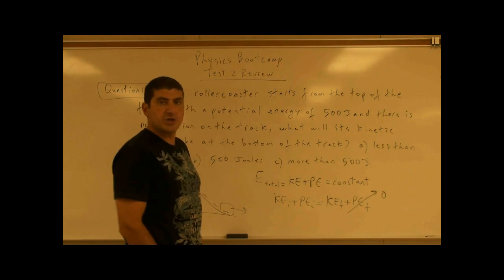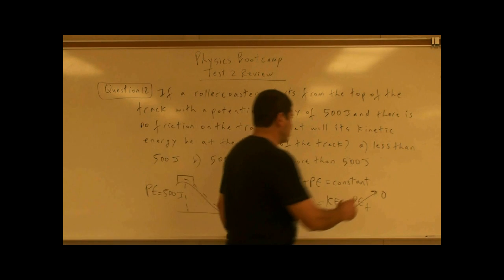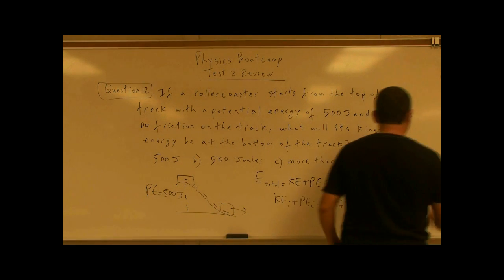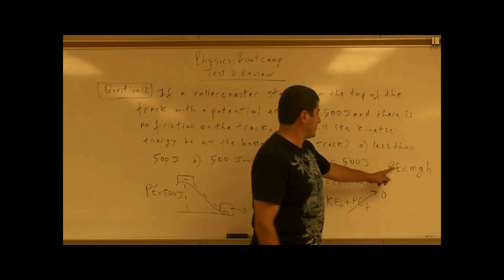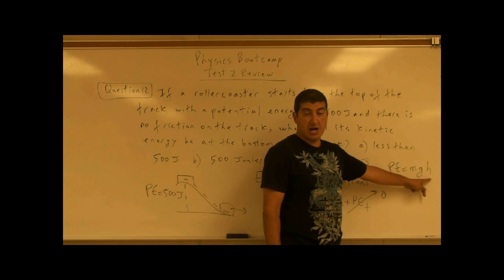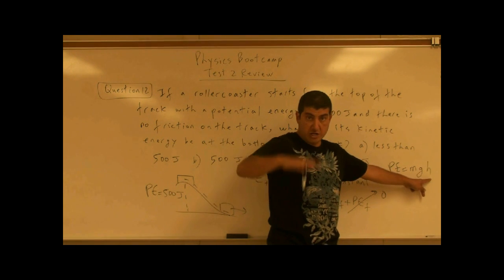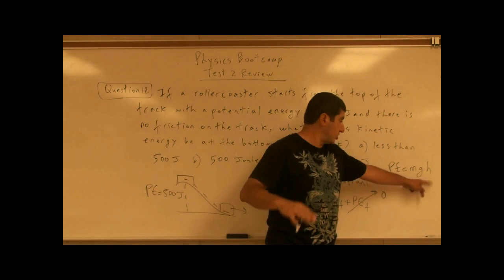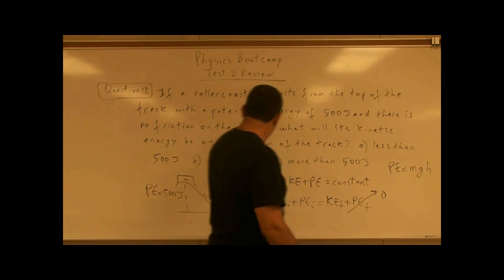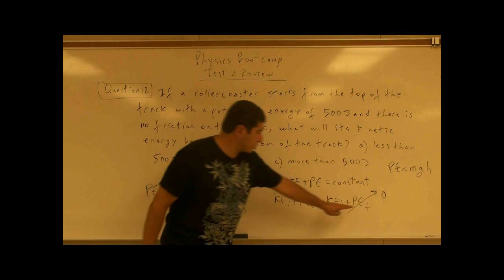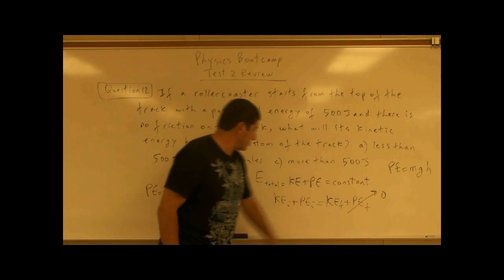When you go to the bottom of the track, the final potential energy is zero. The equation for potential energy is PE = mgh — your weight times the height above the ground. When the roller coaster is on the ground, there is no potential energy.